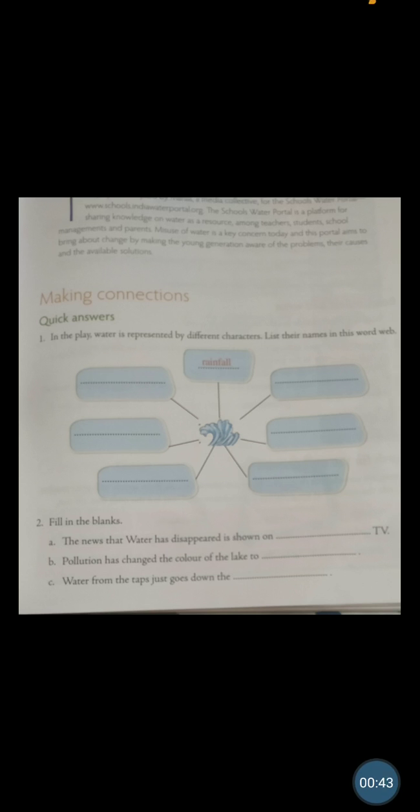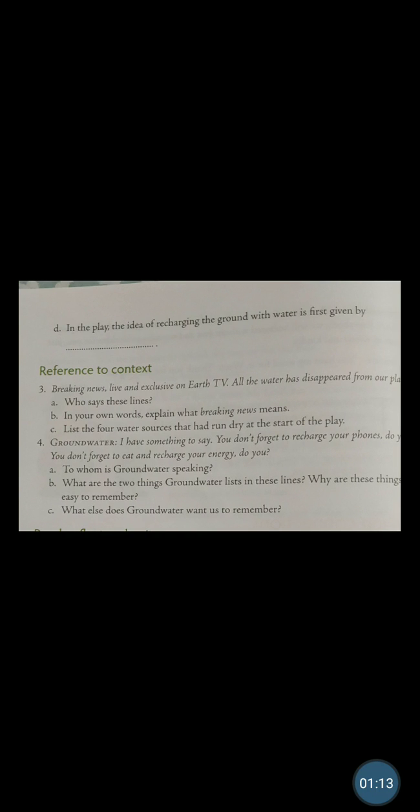What? To grey sludge. You can see the word, pollution has changed the color of the lake to grey sludge. And the third one is water from the taps just goes down the drain. What do you mean by drain? The water tap just remains open, the water just goes down the drain.